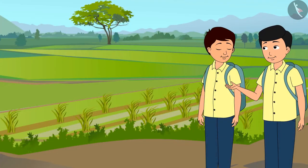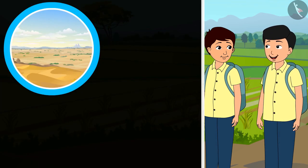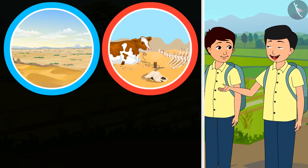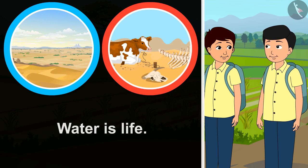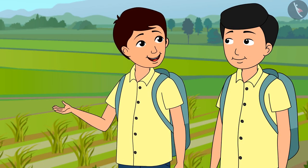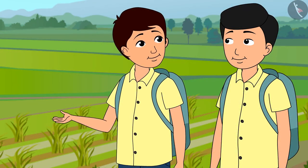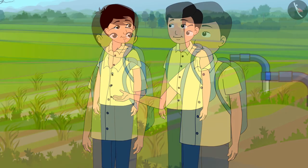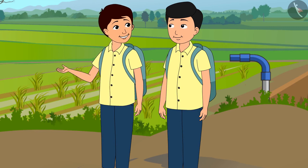How hard we have to work to save water! If there is no water, trees cannot grow, and if there are no trees and plants, humans and animals will not get food. That's why water is life. Look over there — why are so many pipes connected like this? Let's go, I'm very curious to know if this is a new irrigation system.